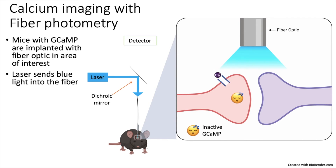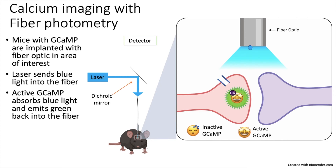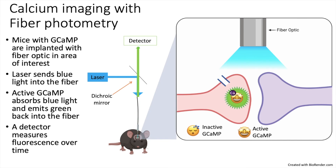However, if the cell is active, calcium will activate GCaMP. Active GCaMP will absorb blue photons and emit a green photon that goes back up to the fiber. These green photons travel back up through the fiber and pass through the dichroic mirror and continue to a detector that converts the photons into an electrical signal that is recorded on the computer. This allows for live tracking of the neural activity over time.